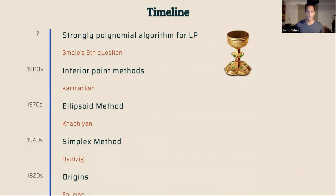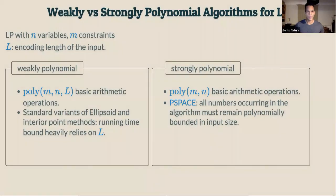What is the exact difference between a weakly and a strongly polynomial algorithm? In a weakly polynomial algorithm, the runtime is allowed to depend polynomially on m and n — the dimensions of the problem — and the bit encoding of the instance L. Standard variants like the ellipsoid method and interior point method have weakly polynomial runtime. A strongly polynomial algorithm, on the other hand, is not allowed to depend on the bit complexity L, but only on the dimensions m and n, and it must remain in P-space.